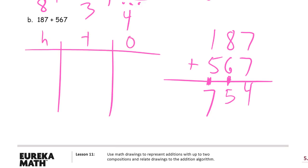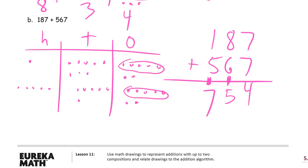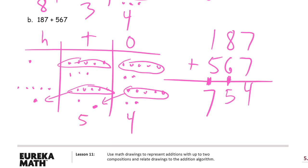And here's our chip model chart — hundreds, tens, and ones. One hundred eighty-seven and five hundred sixty-seven. I can see two five-group rows here that I can put together to make a ten. And two five-group rows of tens here that I can put together to compose a hundred. Four ones left behind, five tens left behind, and here we have 5, 6, 7 — seven hundreds.